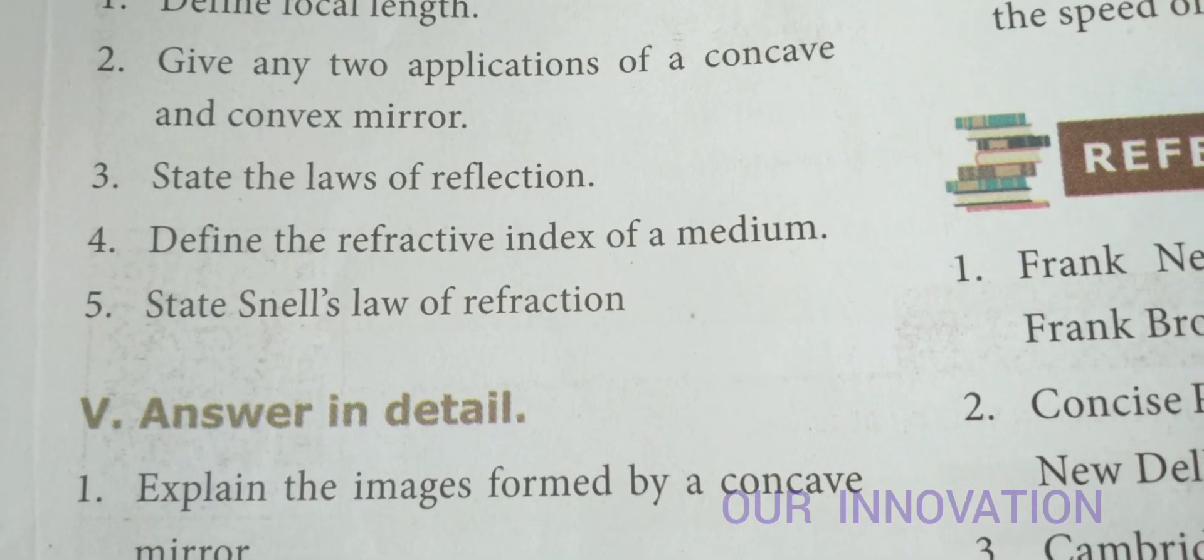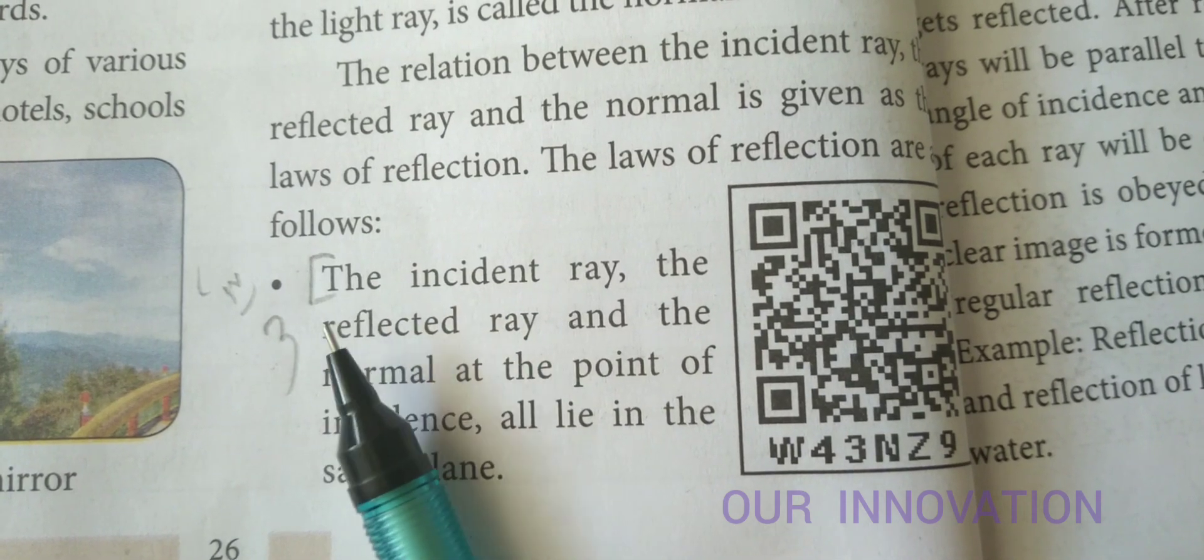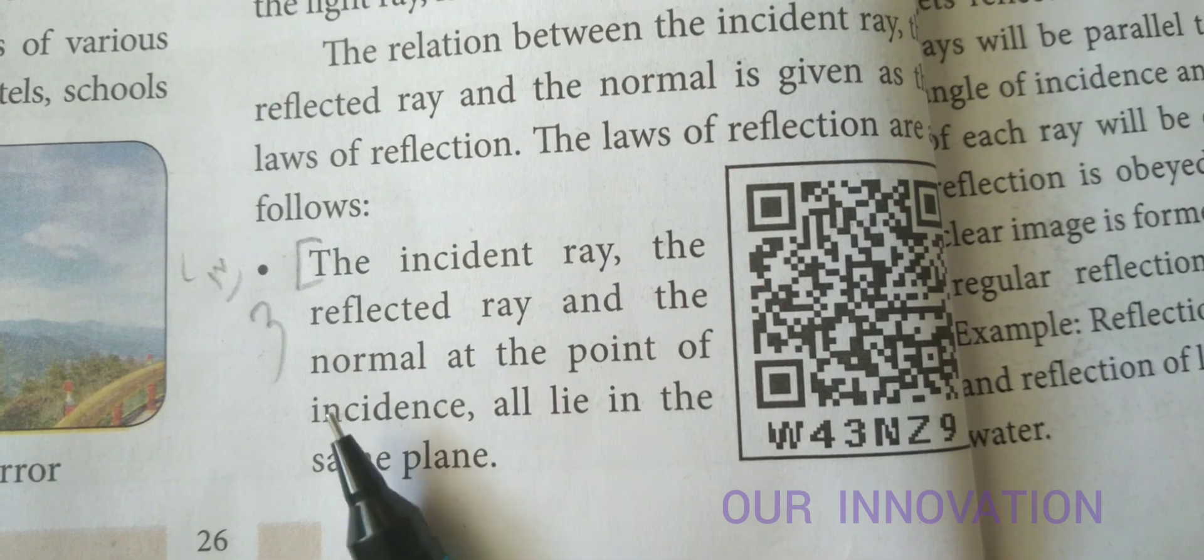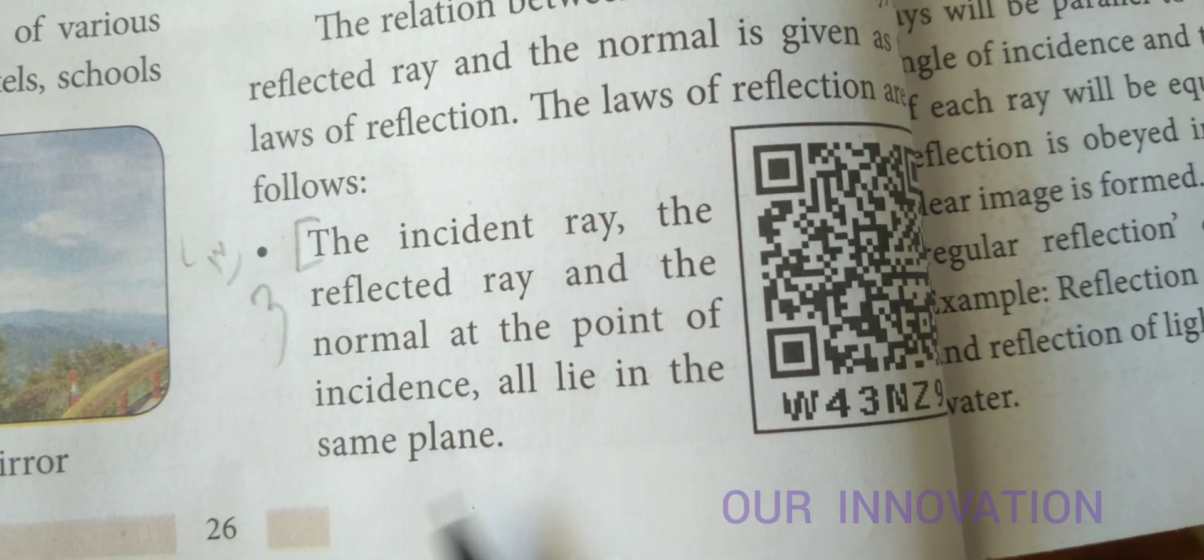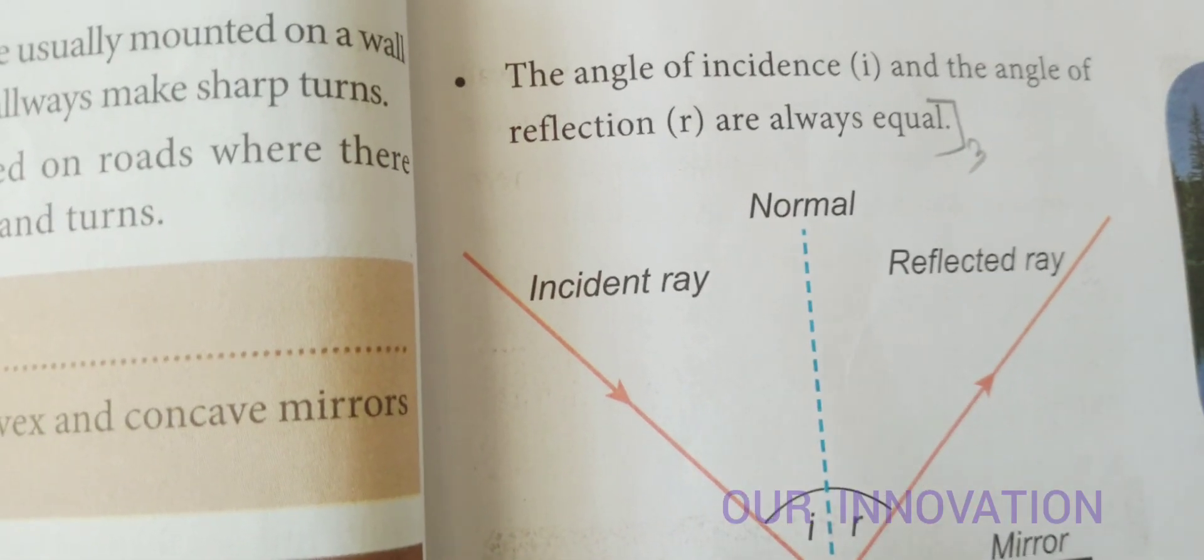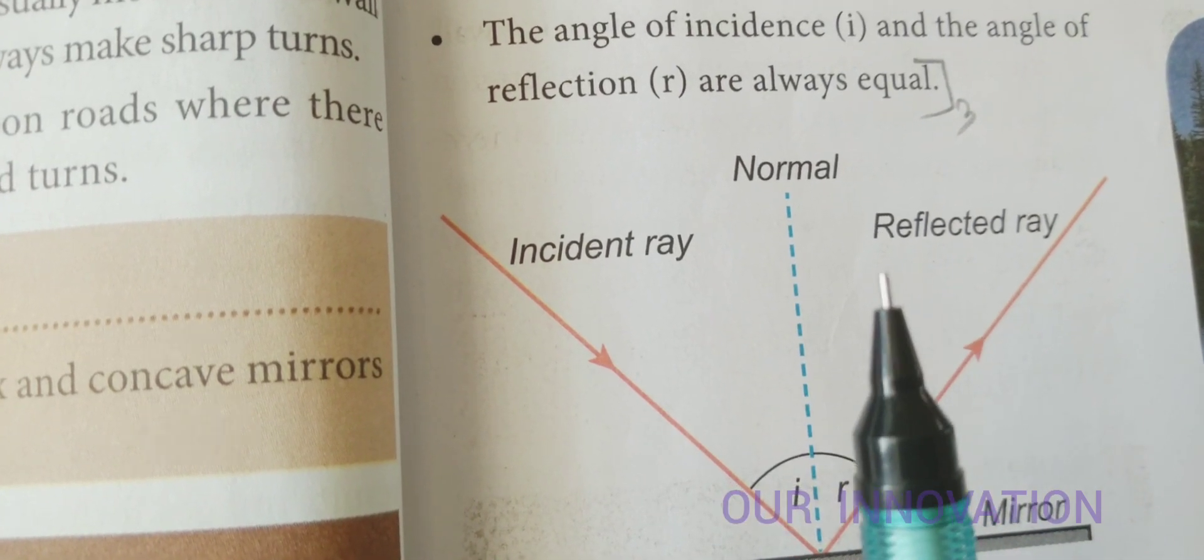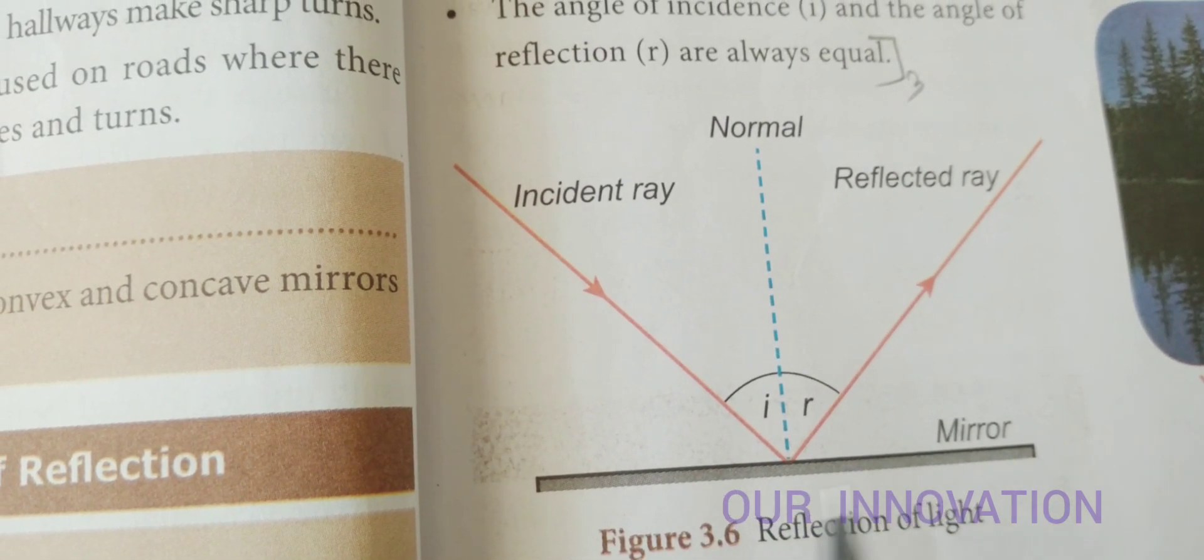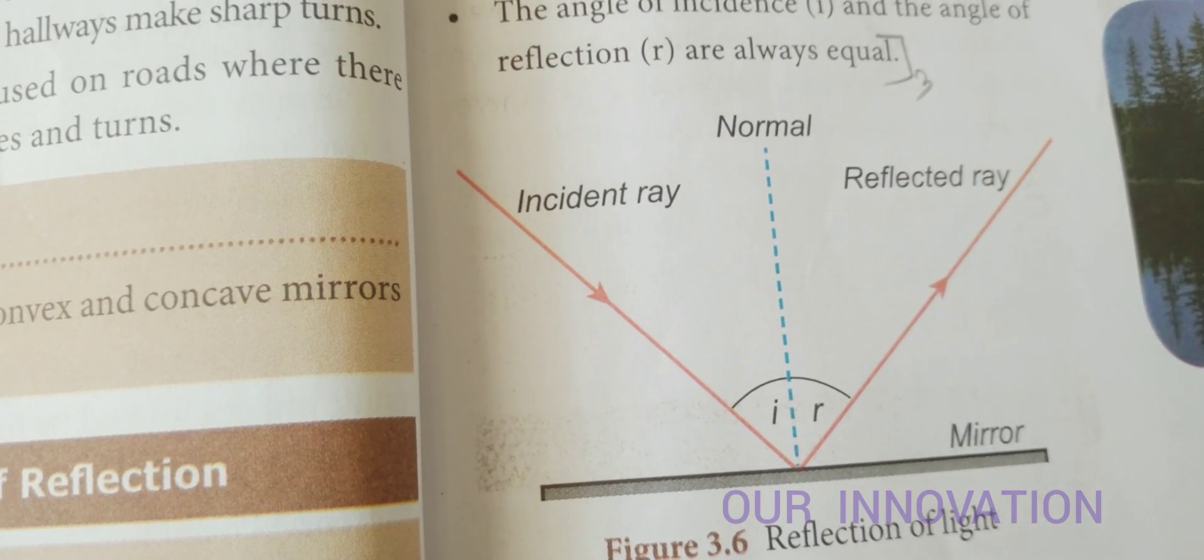State the laws of reflection. The laws of reflection: Here you have to write this point. The incident ray, the reflected ray, and the normal at the point of incidence all lie in the same plane. This is one law. The other law: The angle of incidence and the angle of reflection are always equal. So the explanation is given, so for the diagram you can write reflection of light. You can draw or write these two points. This is the third answer.